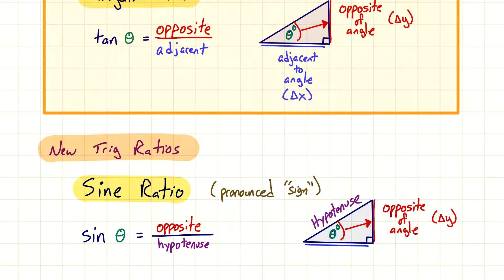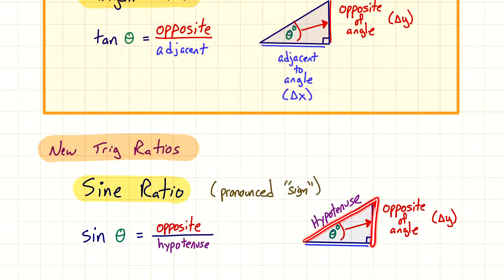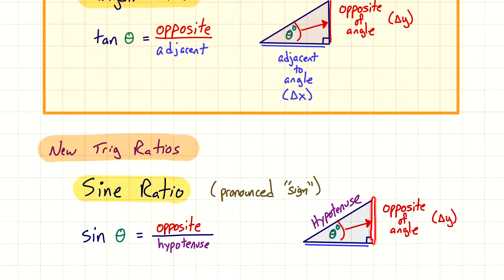Looking at our triangle — I copied the same triangle — we're still using the opposite, but now we're using the hypotenuse. The hypotenuse is always that side across from the right angle; you can think of the little right-angle box as an arrow pointing to the hypotenuse. So these are the two sides we're focused on. The two legs give us our tangent, but opposite and hypotenuse tell us we're going to use our sine ratio.